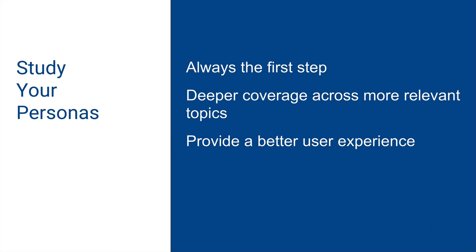By developing an understanding up front about your core audience, you'll develop the right content and distribute it at the right time. You must have a deep understanding of their jobs, pains, and gains. Jobs describe the things your customers are trying to get done in their life. Pains describe anything that annoys your customers before, during, and after trying to get a job done, or simply prevents them from getting it done at all. Gains describe the outcomes and benefits that your customers want.